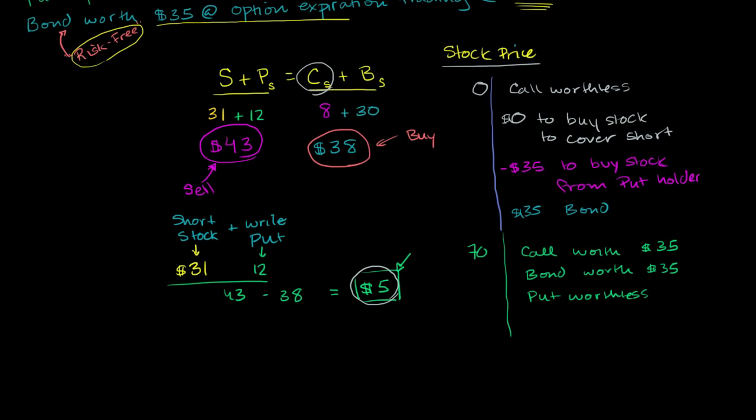But we still have to cover our short. We have to buy back the stock and return the stock to whomever we borrowed it from. And now to cover our short, to buy the stock, it's going to cost us $70. So we're going to have to use this $70, the $35 from the call and $35 from the bond to actually cover our short position. So $70 to buy stock and cover short.